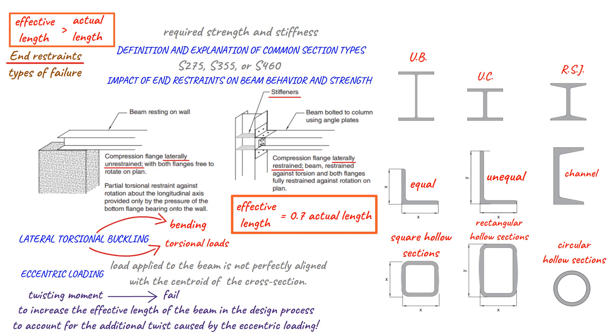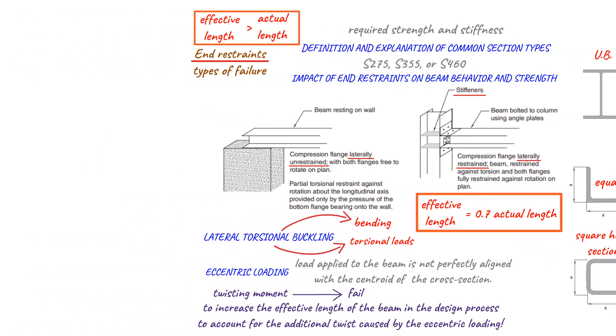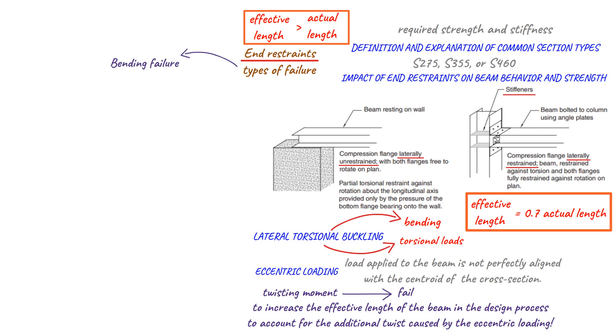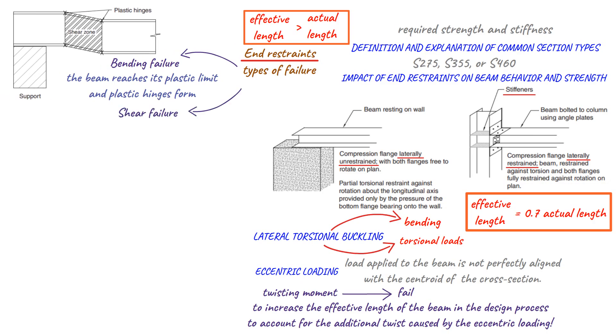It's important to consider the various ways in which a beam can fail during the design process. Bending failure occurs when the beam reaches its plastic limit and plastic hinges form. Shear failure occurs when the shear load exceeds the capacity of the section.